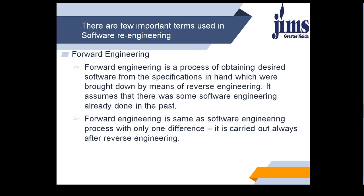Forward engineering is a process of obtaining desired software from the specification in hand, which were brought down by means of reverse engineering. It is assumed that there was some software engineering already done in the past. Forward engineering is the same as the software engineering process with only one difference: it is carried out after reverse engineering.